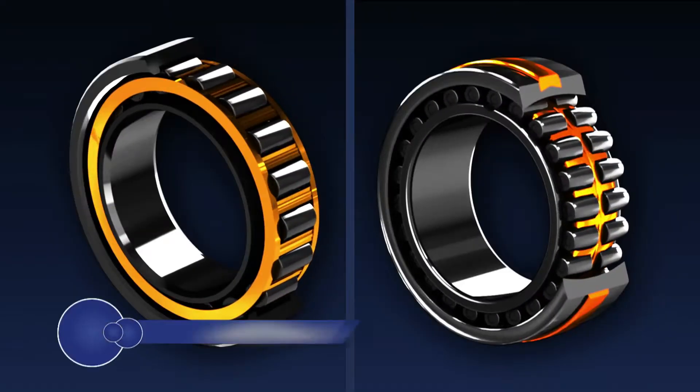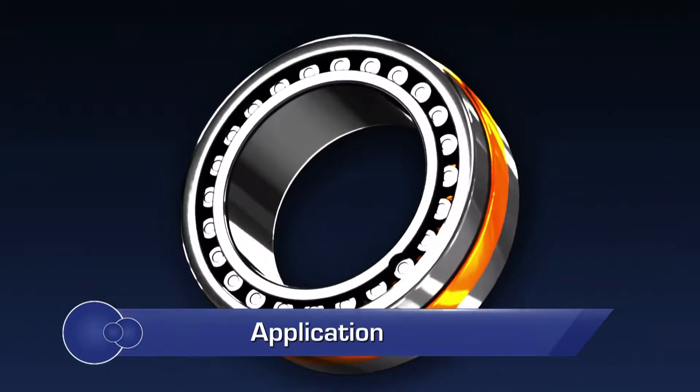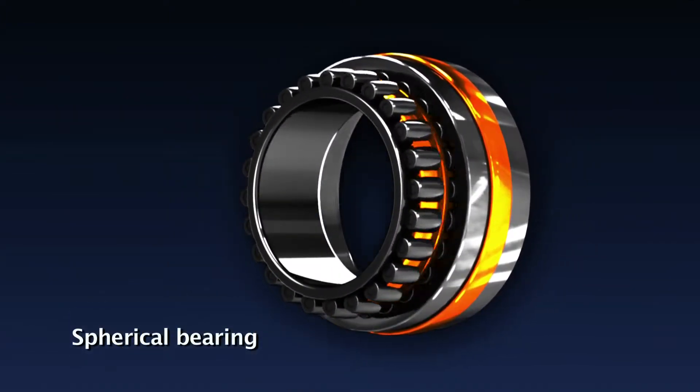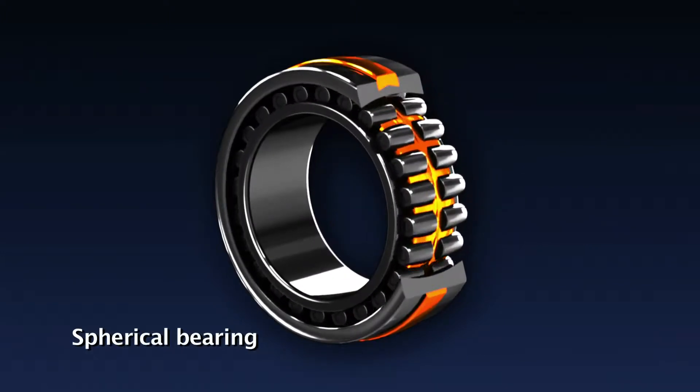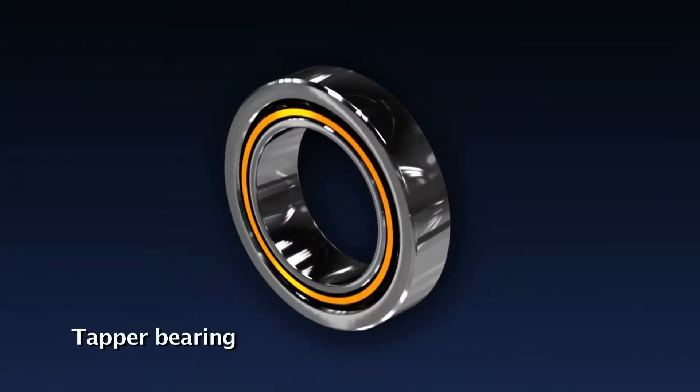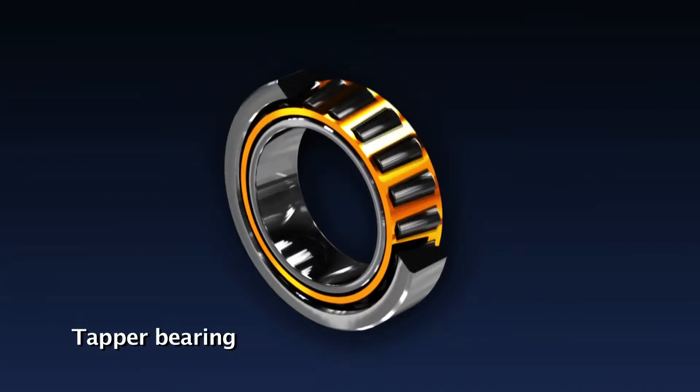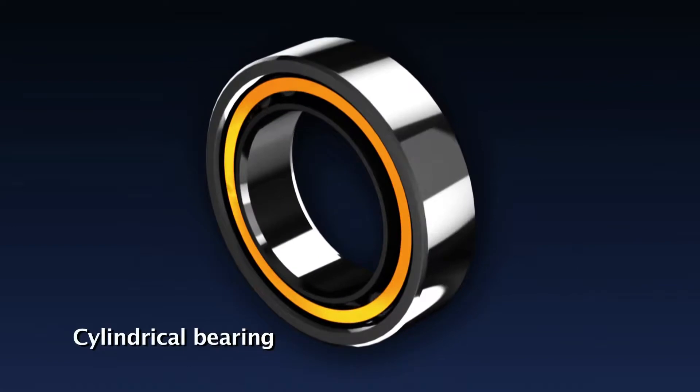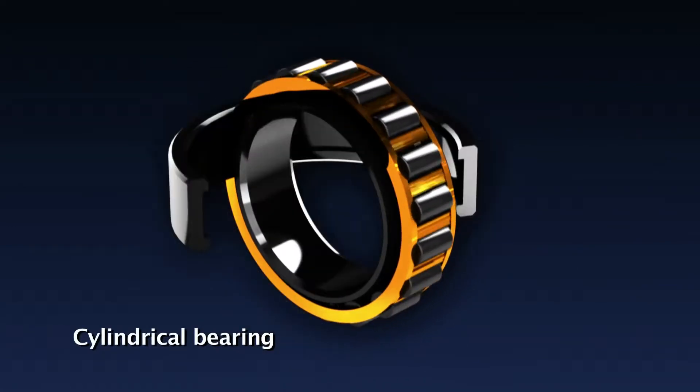To suit different types of rolling profiles, different types of bearings are available. Spherical bearing is preferred for bar mill, flat rolling, and light sectional mill. Taper bearings are preferred for flat rolling, light and heavy sectional mills. Cylindrical bearings are preferred for flat rolling and heavy sectional mills.